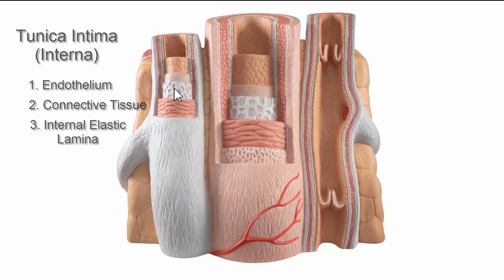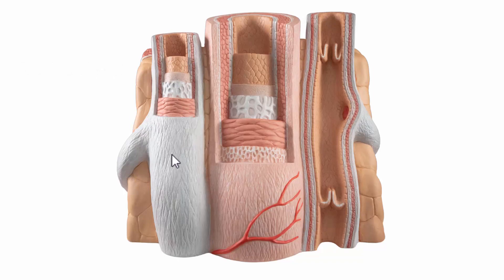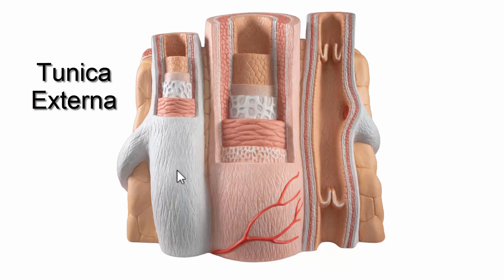Next we have the tunica media, which is made up of smooth muscle. And then we have the tunica externa, which is the outermost layer, made up of connective tissues and elastic fibers.